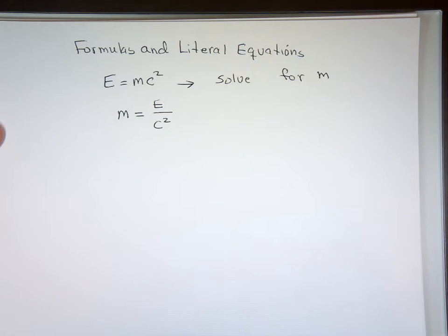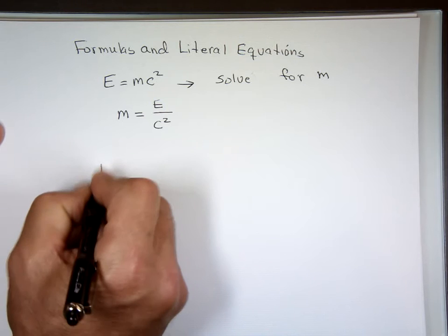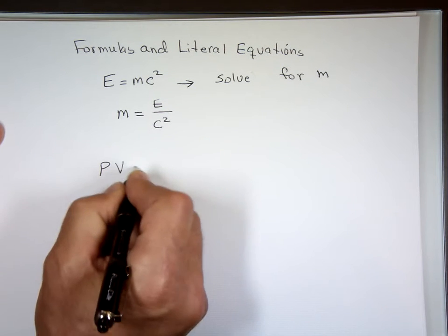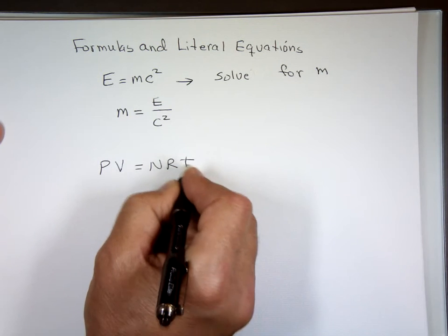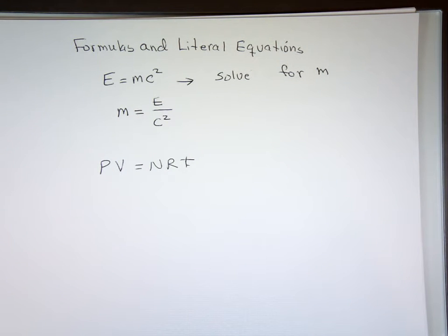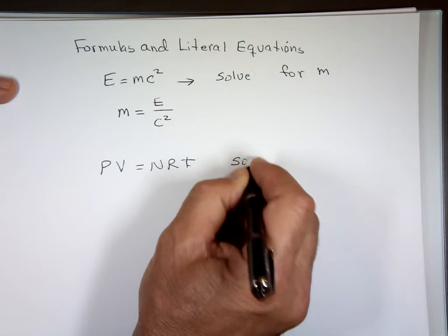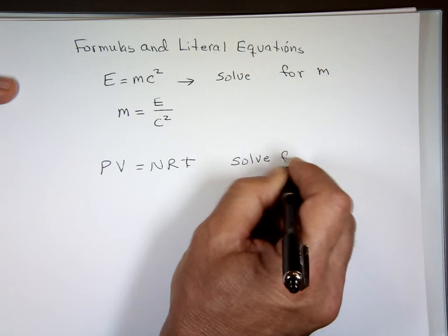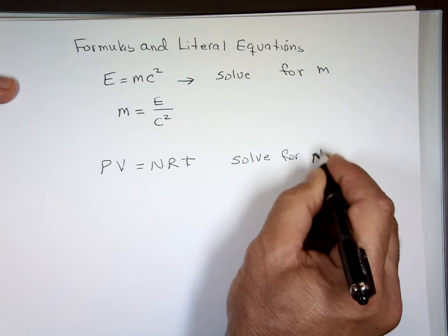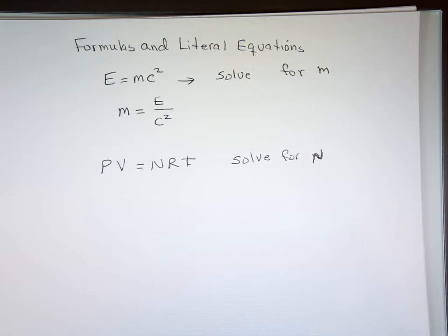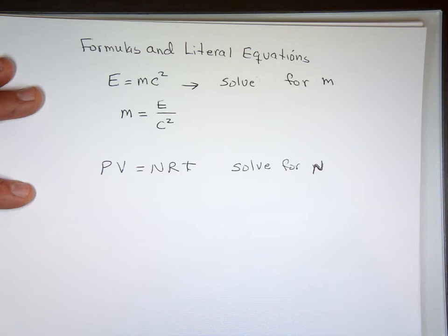Anyone took chemistry? You have this equation probably: P times V equals N times R times T. Capital N, and also small n times R times T. And let's say I want to solve for n — capital N, the number of molecules. Small n is number of moles.